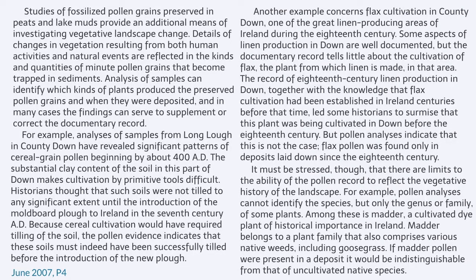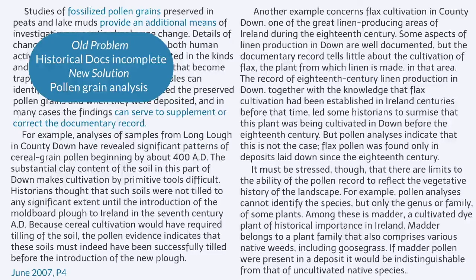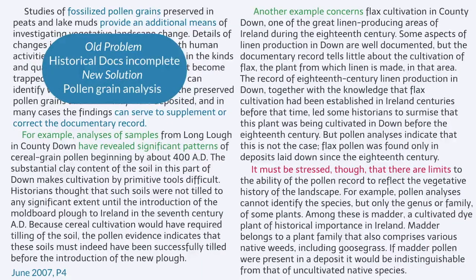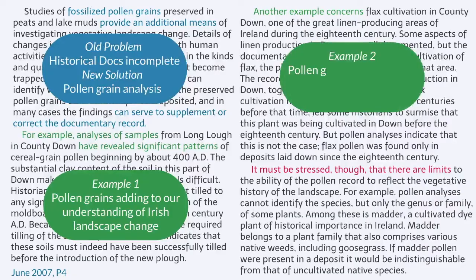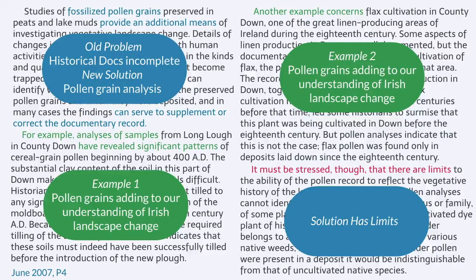At this point in this passage, I feel like I'm basically done. I know the topic is people trying to study Ireland's changing habitat. I know that the old kind of sucky way was looking at documents, and the new kind of optimistic way is using pollen grain. Go ahead and read the rest of the passage and see if there's any more big ideas to add. Welcome back. Just recapping — we had just come from learning our solution: pollen grains are an additional means that could correct the documentary record. The beginning of the next paragraph is 'for example,' so this whole paragraph is just evidence. The beginning of the next paragraph is 'another example' — also subsidiary. The beginning of the last paragraph has a pivot and the author's expressing a new opinion: there are some things that pollen can't figure out.